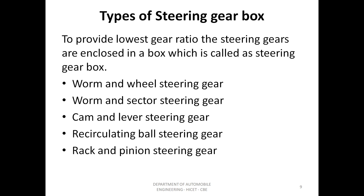There are different types of steering gearboxes. To provide a low gear ratio, the steering gears are enclosed in a box called a steering gearbox. The types are: worm and wheel steering gear, worm and sector steering gear, cam and lever steering gear, recirculating ball steering gear, and rack and pinion steering gear.